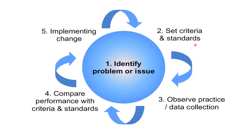The second step is to set certain criteria and standards. These criteria and standards should be set according to national standards that are followed internationally — such as what standards are being followed according to RCOG guidelines or WHO guidelines. Your standards should align with those international standards. The third step is to observe practice or collect data — for example, how many cesarean sections were performed in a year, how many inductions of labor were given, or how many instrumental deliveries were performed.